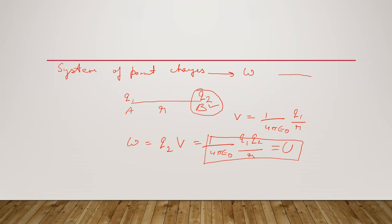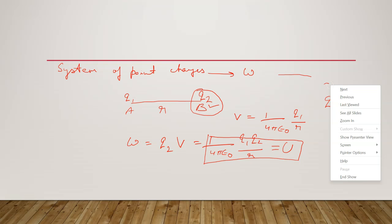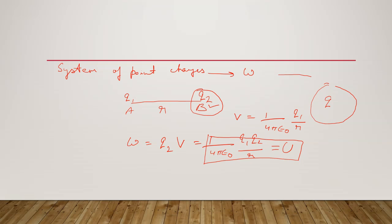Now here I have used the term 'from infinity to point B'. I have already discussed in one of my previous lectures the meaning of infinity. Here infinity means from out of range of the system. Out of range means suppose there is a charge q and it can interact with another charge within a certain region — outside of this region everything is infinite for this charge. This is the meaning of infinity.